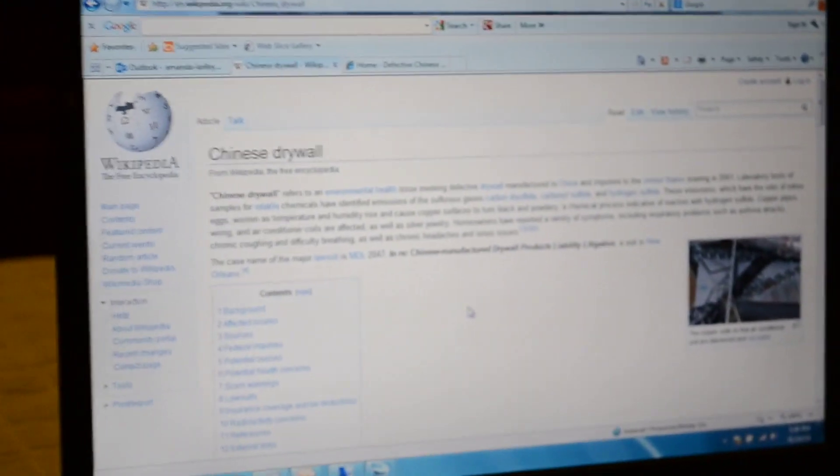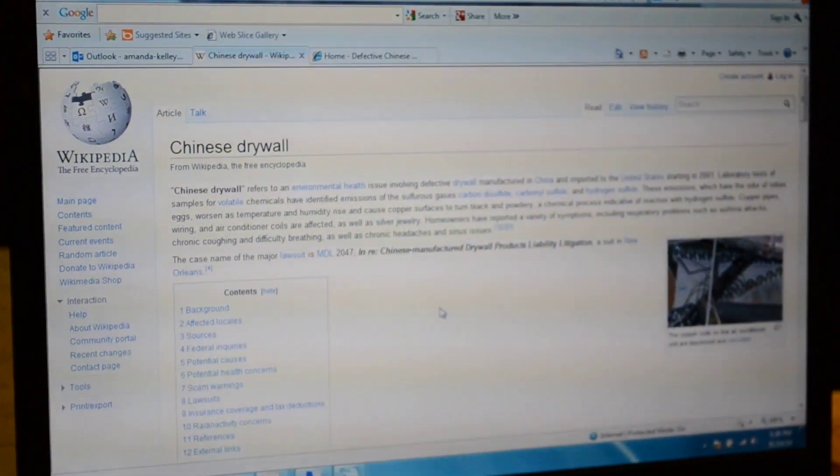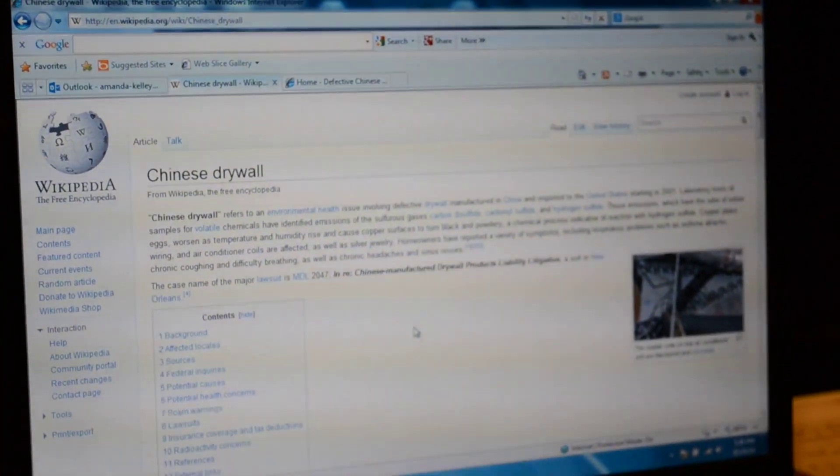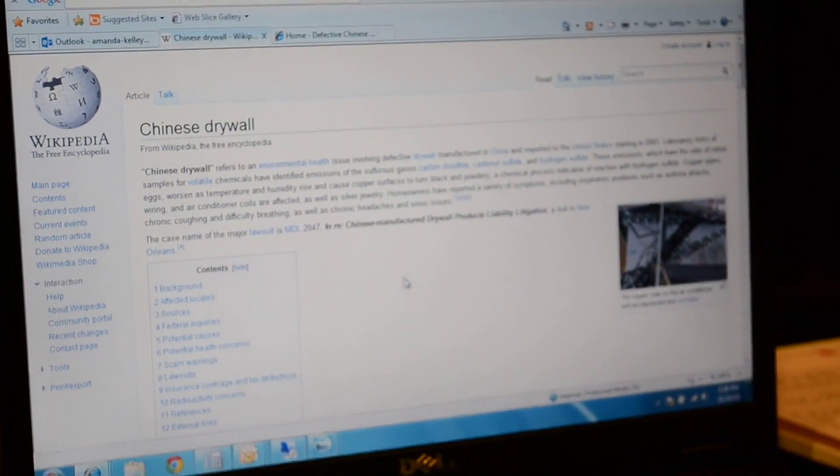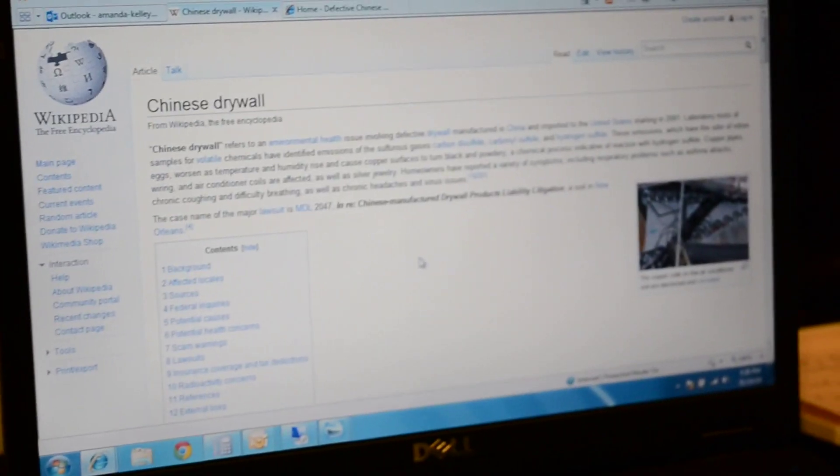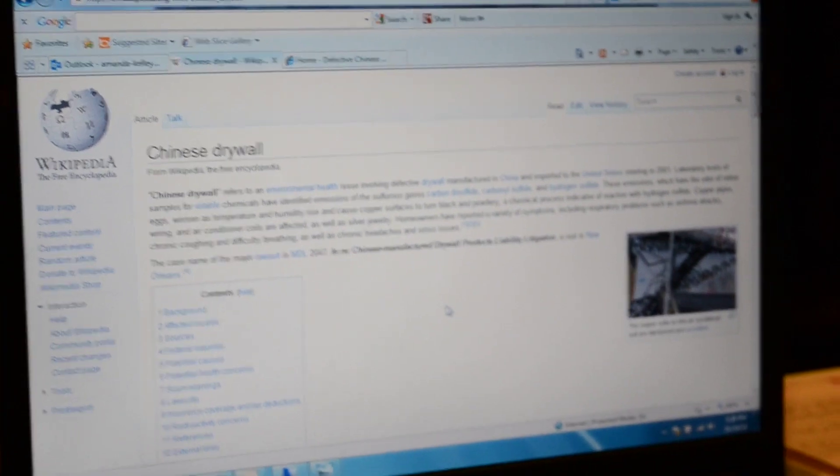The majority of people I've talked to have no idea what Chinese drywall is. If you want to look into it, you can go on your computer and search for Chinese drywall. This Wikipedia page says Chinese drywall is defective drywall manufactured in China and imported to the United States starting in 2001. It emits toxic chemicals like carbon disulfide, carbonyl sulfide, and hydrogen sulfide, and these chemicals corrode the metals in your house.